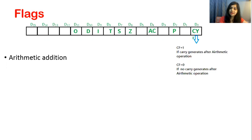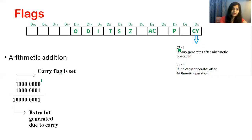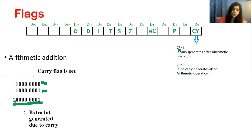Let's start with the carry flag. CY stands for carry flag. Carry flag is 1 if carry generates after arithmetic operations. For example, in arithmetic addition, I have taken one 8-bit number and another 8-bit number. The result is a 9-bit number. This 9th bit is the carry generated out of the arithmetic addition, and when such carry generates after arithmetic addition, this carry flag will set to 1.